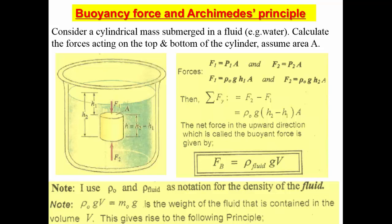Now consider a cylinder submerged in a fluid like water. How can we calculate the forces acting on the top and bottom of the cylinder, which has cross-sectional area A? The force on the top equals pressure times area. At the bottom it is also pressure times area. The pressure differs because pressure depends on depth — h1 for the top and h2 for the bottom.